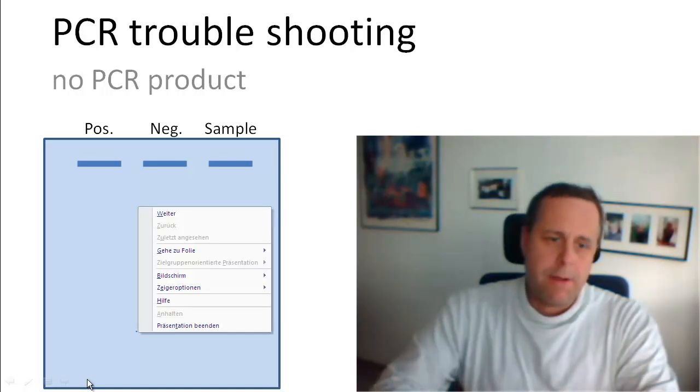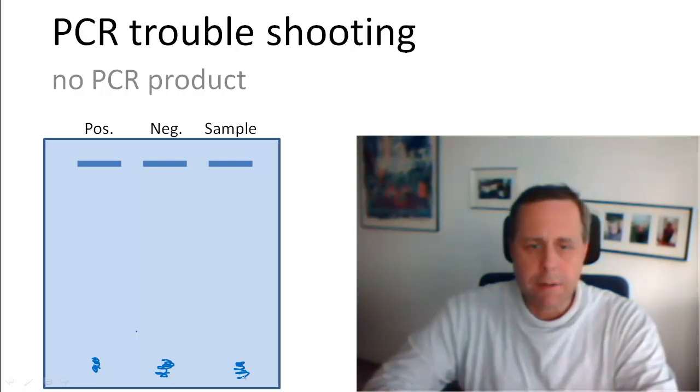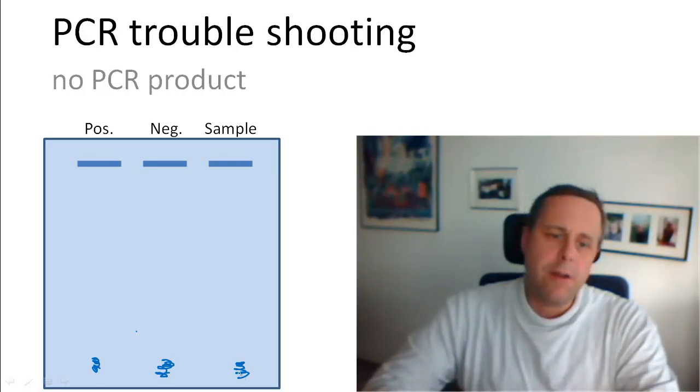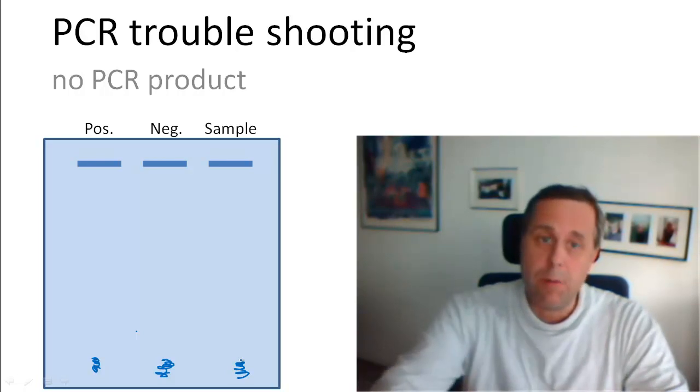What you get in this case is just a little bit of a smear like here and here if you run your PCR products on an agarose gel. That's representing your primers that have not been used for amplification, and otherwise you see no product at all. So what could have happened? Why could it not have worked?